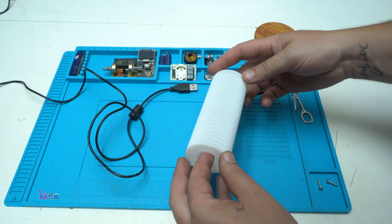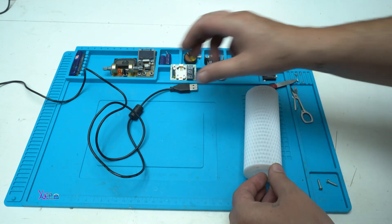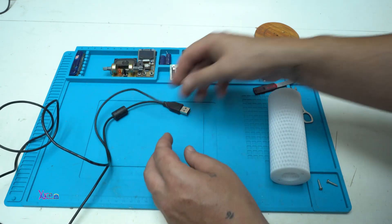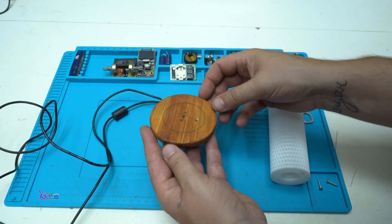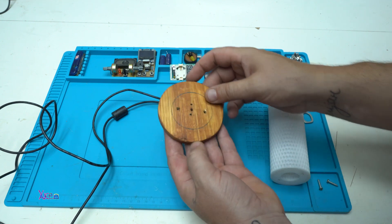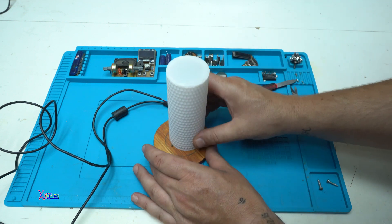Besides the main 3D printed base, you will need a short USB cable and this handmade wooden circle plate. And this will go like this.